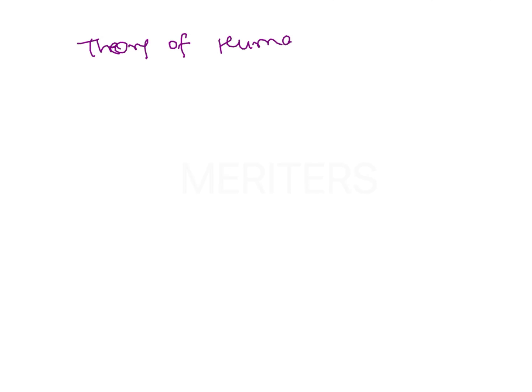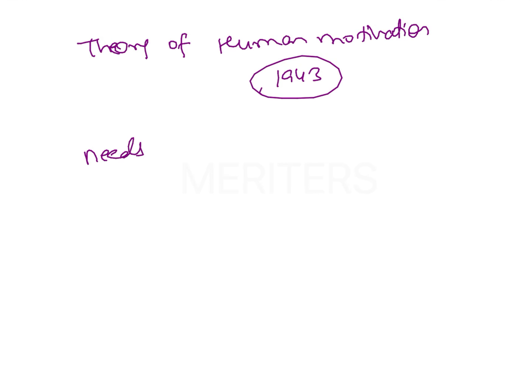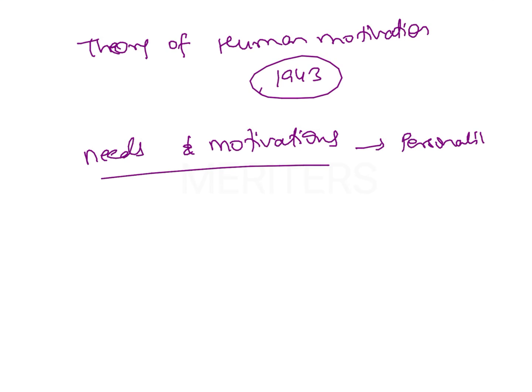In his paper named 'The Theory of Human Motivation,' given in the year 1943, Maslow stated that during the periods of growth and development, the personality of a person is going to rely on certain needs that have priority and motivations. So motivations and needs are what play a crucial role in the development of personality.